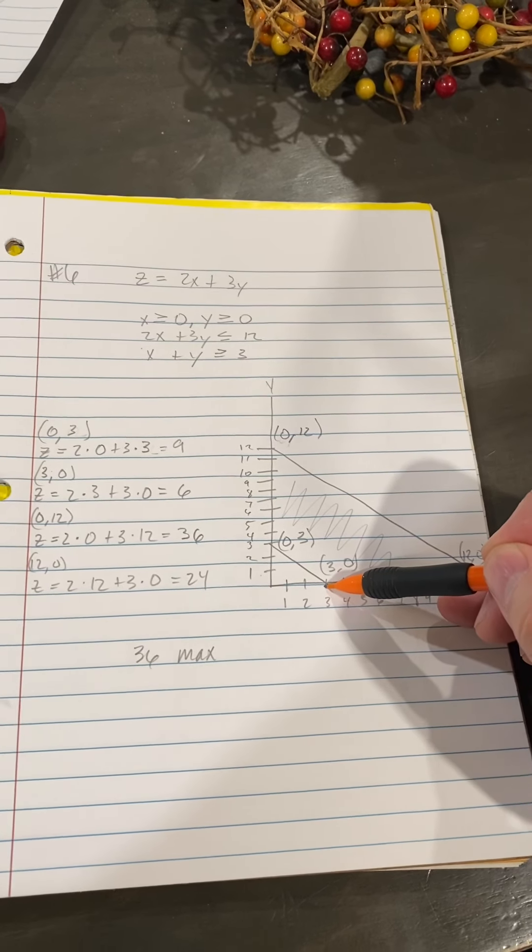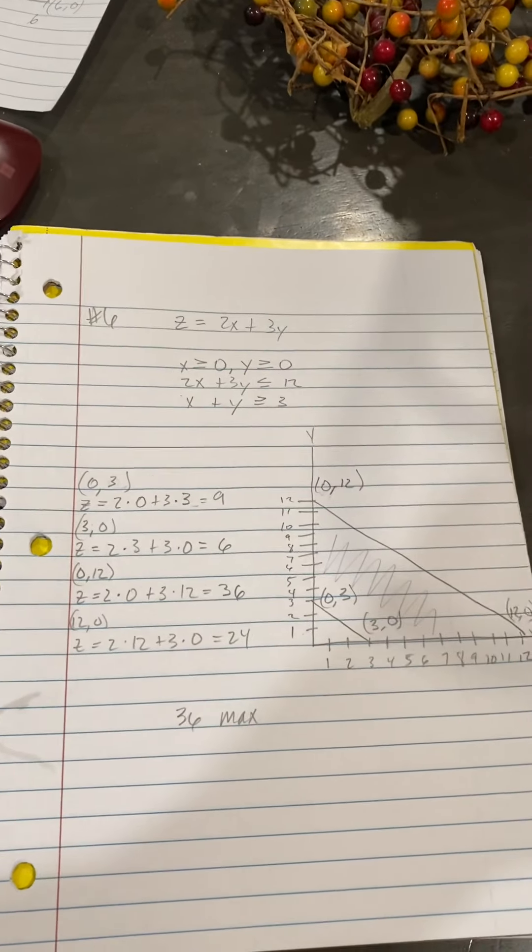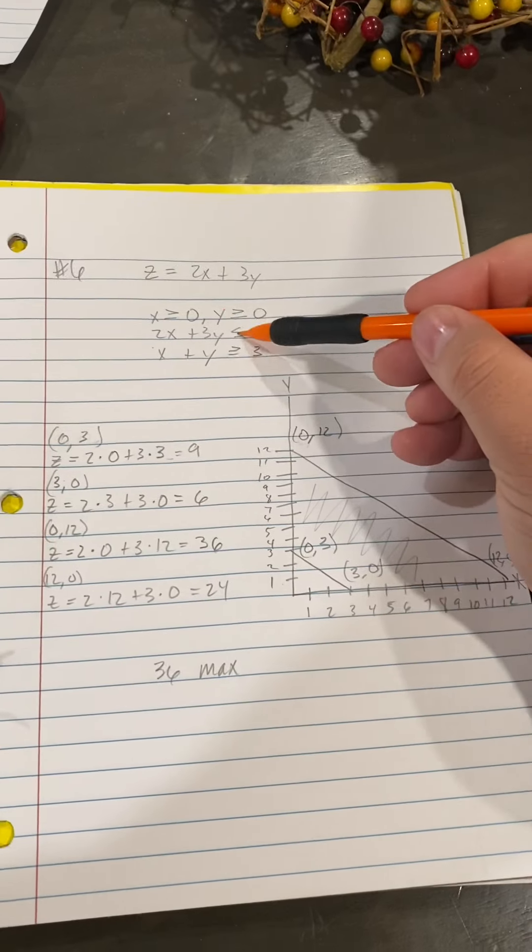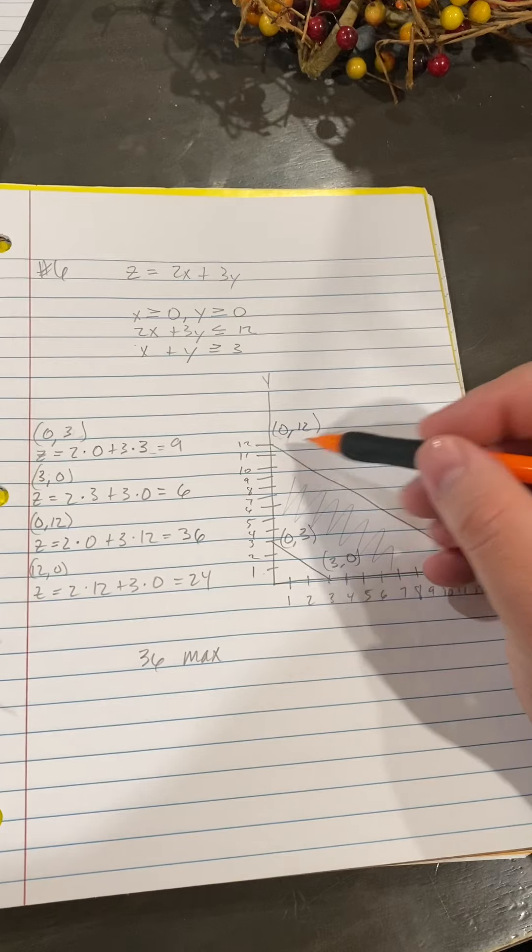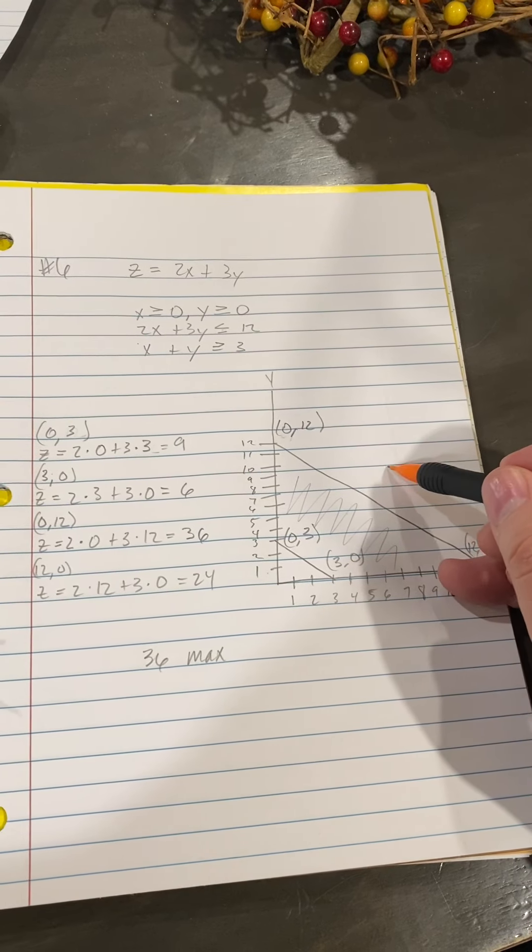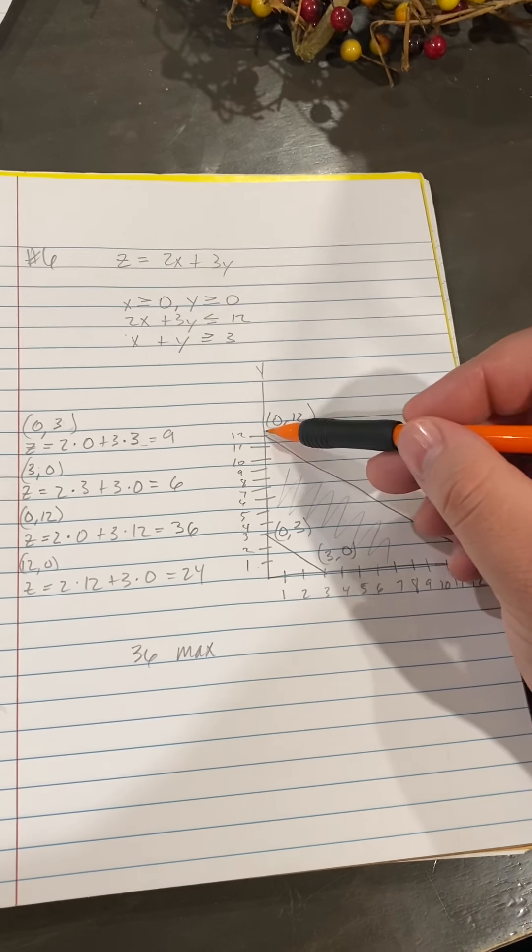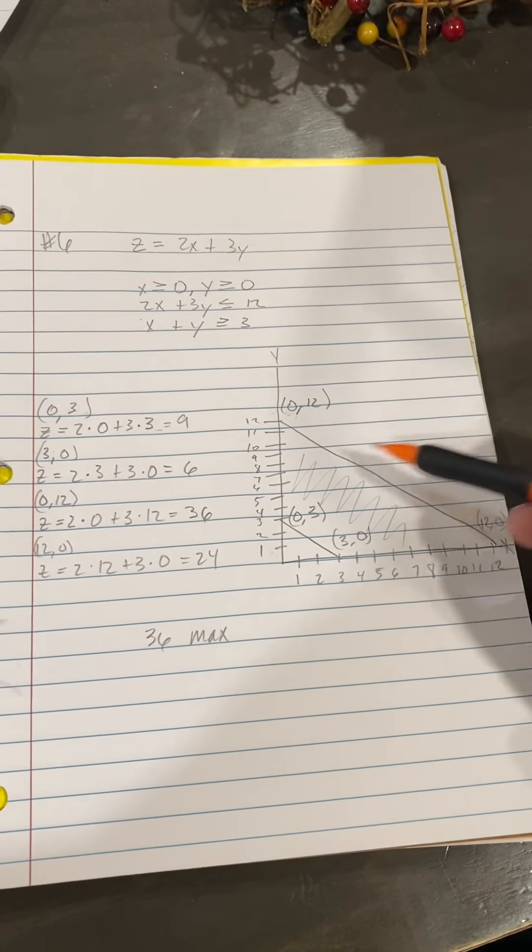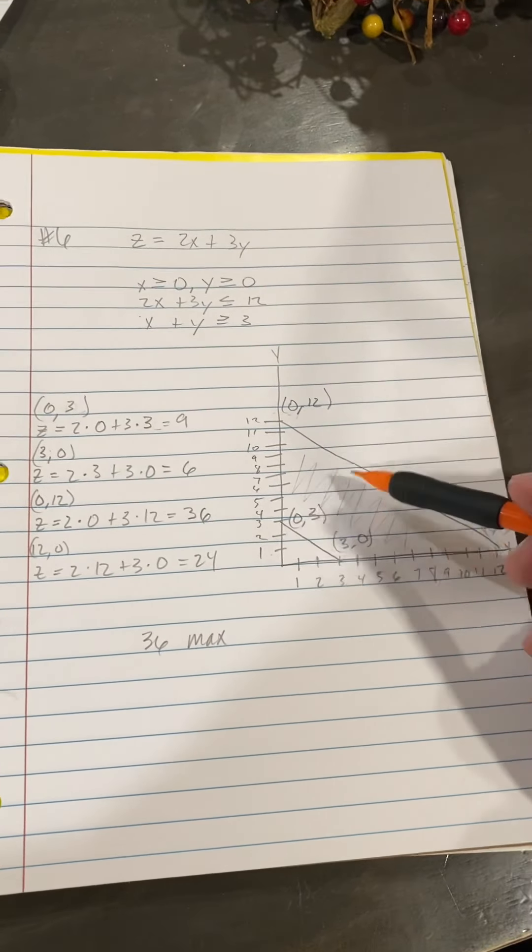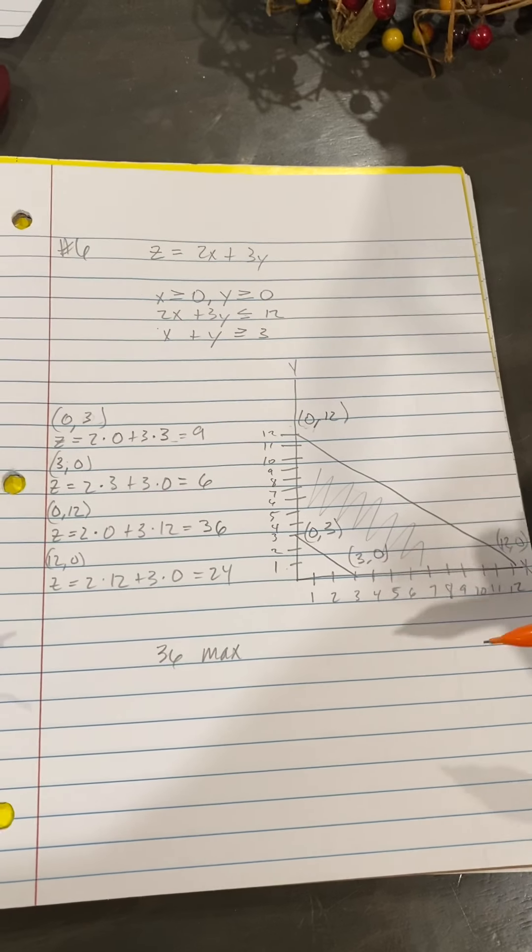When I came to 2X plus 3Y less than or equal to 12, I knew it wasn't going to exceed this region outside of here. So I graphed accordingly, found 12 and 12, and then I've shaded my region to show this is my region here.